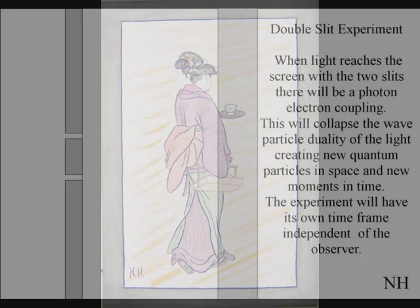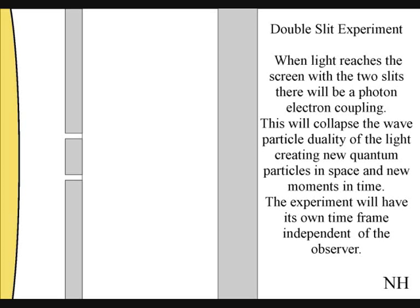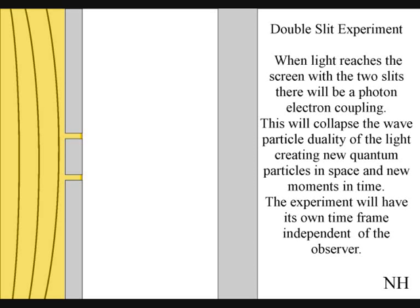The best way to see this happen directly with light is in the two-slit experiment. When the light reaches the screen with the two slits, the photons will react with the electrons of the screen. This will collapse the wave-particle duality of the light, creating new quantum particles in space and new moments in time.